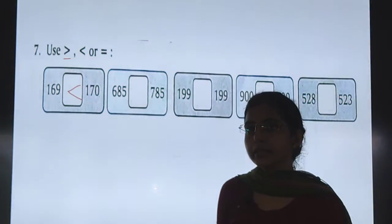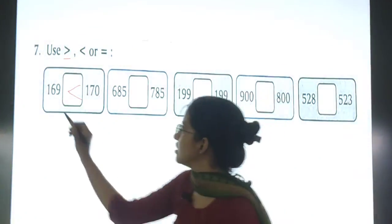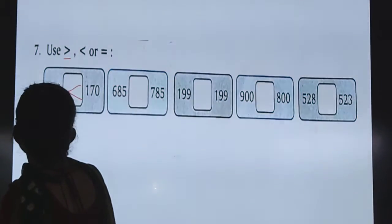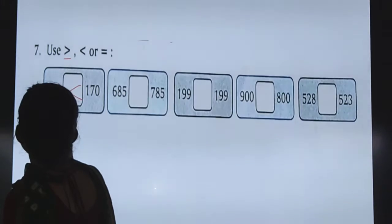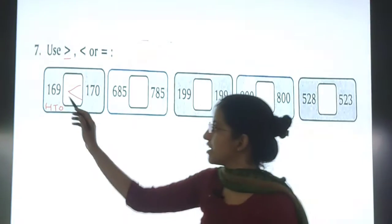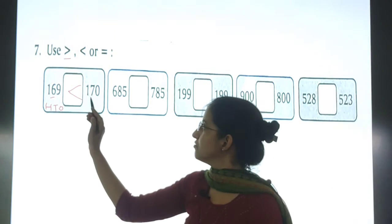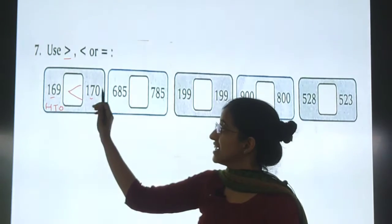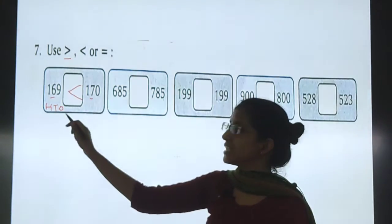How 170 is greater? See. We will first of all, we will put the place value. Hundreds, tens and ones. Okay? At hundreds place, we are having one, one. Okay? Then we will compare the digit present on tens place.